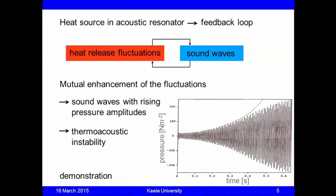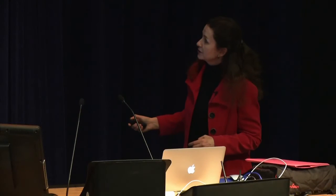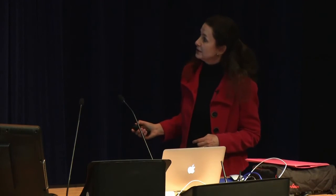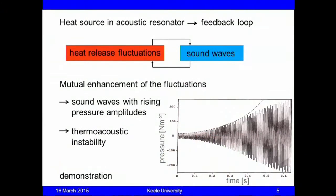I have a graph showing the time history of such an instability — an old graph I measured as a PhD student. It shows the oscillation as a function of time: initially you see an exponential increase due to the feedback, but then other phenomena kick in which limit the rate of growth, and eventually you get a limit cycle.